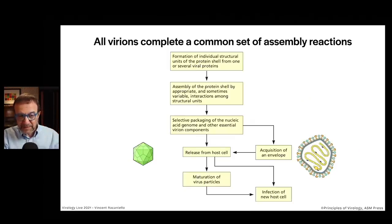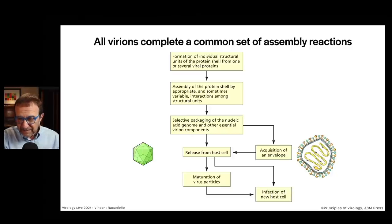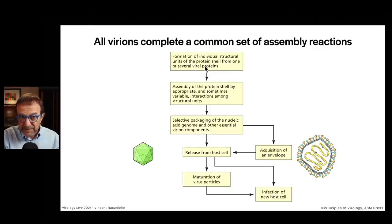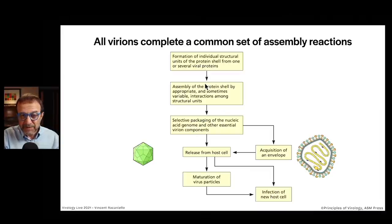All virus particles complete a common set of assembly reactions. There are a few differences that can go one way or another. For example, first is the formation of individual structural units of the protein shell from one or several viral proteins. The protein shell has to assemble by interactions among the subunits. We talked about these kinds of interactions based on symmetry before.